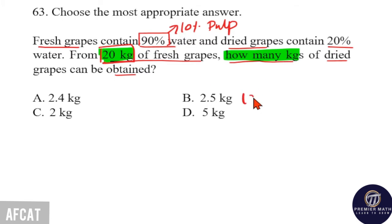So, 10% of this 20 kg is the pulp. 10% of 20 kg means percentage and double zero cancel, so remaining 2 kg. That means, out of this 20 kg, only 2 kg is the pulp and 18 kg is water.